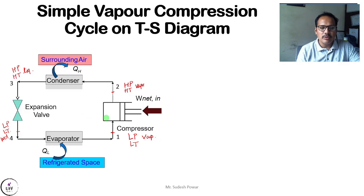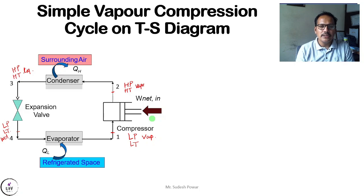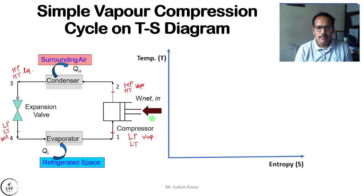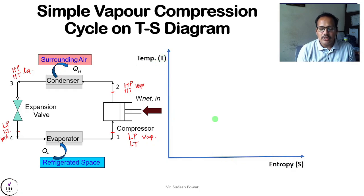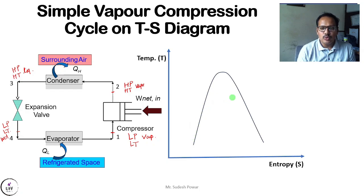Now let's draw the simple vapor compression cycle on the TS diagram — that is, the temperature-entropy diagram. Temperature is on the y-axis and entropy is on the x-axis. For every substance there is a dome: on the left side liquid is present, inside the dome the wet region exists (liquid plus vapor), and on the right side of the dome the vapor region is present.